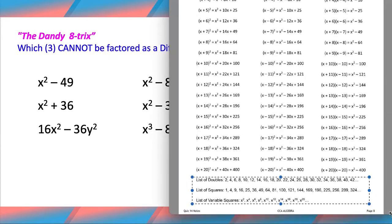So here's a list of all the squares, friends. And then here's a list of all the variable squares. Basically, you just have to be an even exponent to be a perfect square.